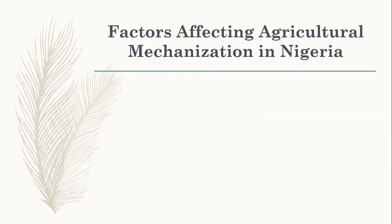Now, the factors affecting agricultural mechanization in Nigeria. Number one, the attitude of Nigerian farmers. Nigerian farmers have a kind of attitude where they always believe in their traditions. They don't want to employ new, modern inventions unless the government tries to enforce it or takes much time orienting them to understand the actual benefit of using those modern tools.